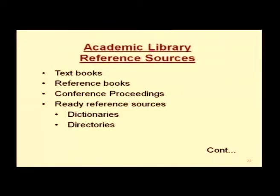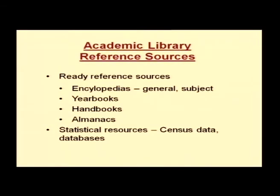When we come to reference sources, academic libraries have textbooks, since students require them, as well as reference books for specific subjects or higher studies. Conference proceedings are available, and different ready-reference sources such as dictionaries — for different words — and directories — for different addresses and locations — are there. Ready-reference sources like encyclopedias, both general and subject-specific, yearbooks, handbooks, and almanacs are all available in any academic library setup.